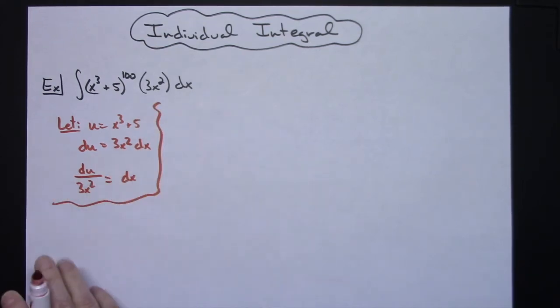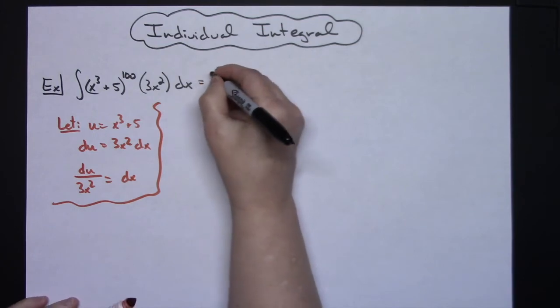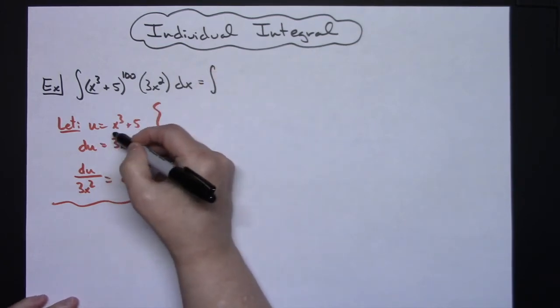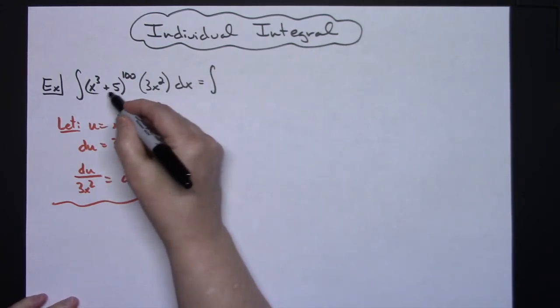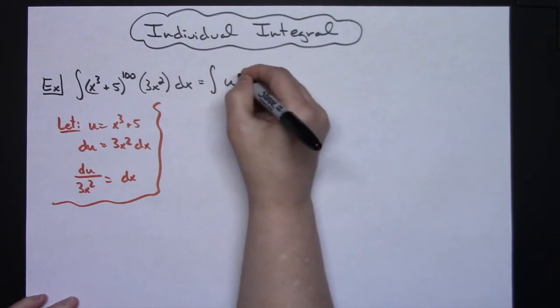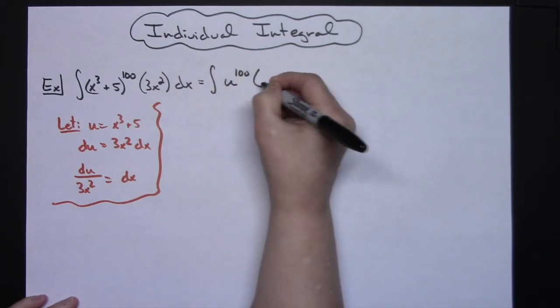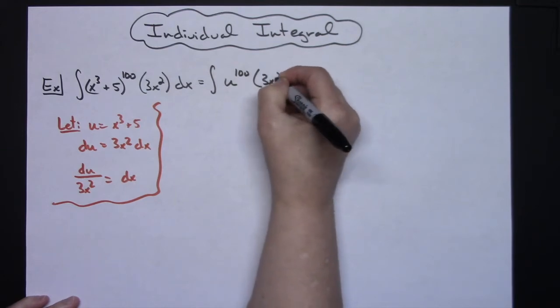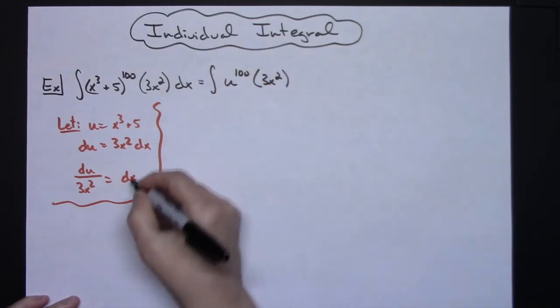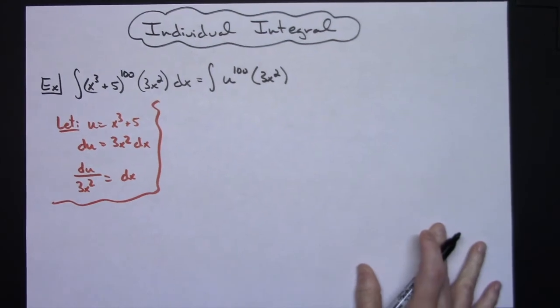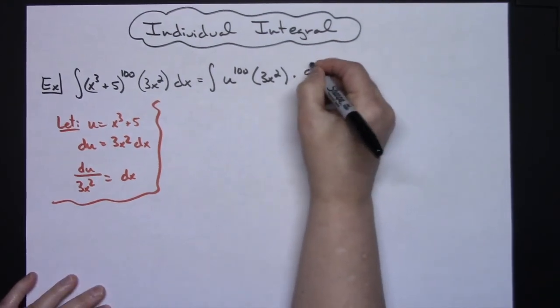Okay so then I'm going to come up to this original problem and I'm going to start substituting things. I said u is equal to x to the third plus 5 so I'm going to substitute it right there. So I'll have u to the 100 and then I'll have the 3x squared and then changing the dx with what that equals I will have a du over 3x squared.